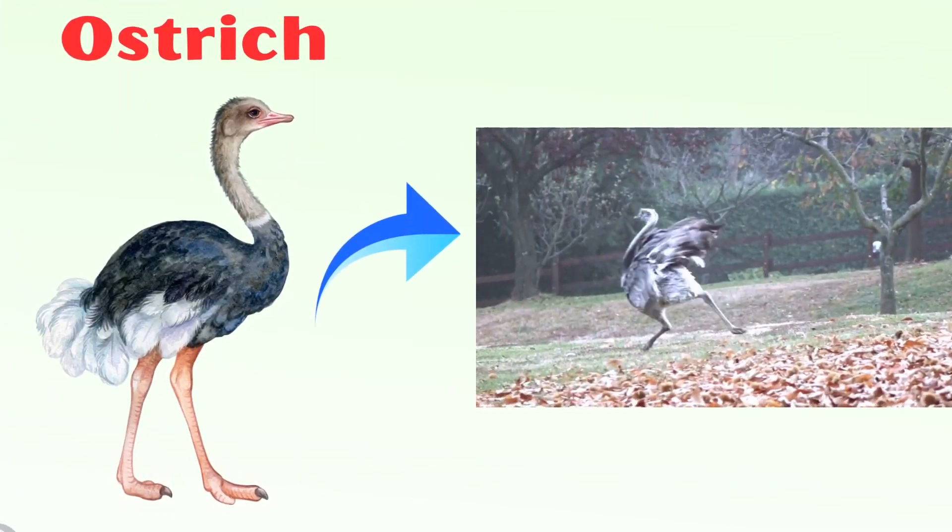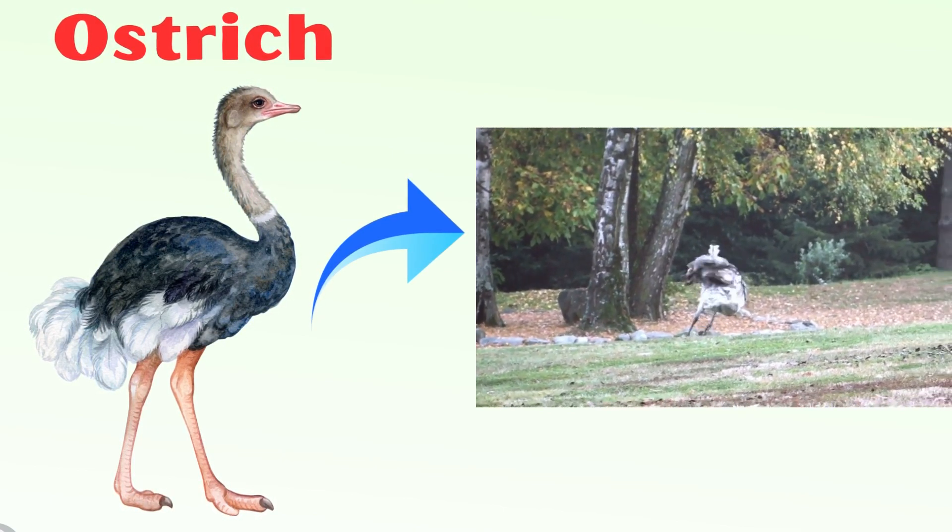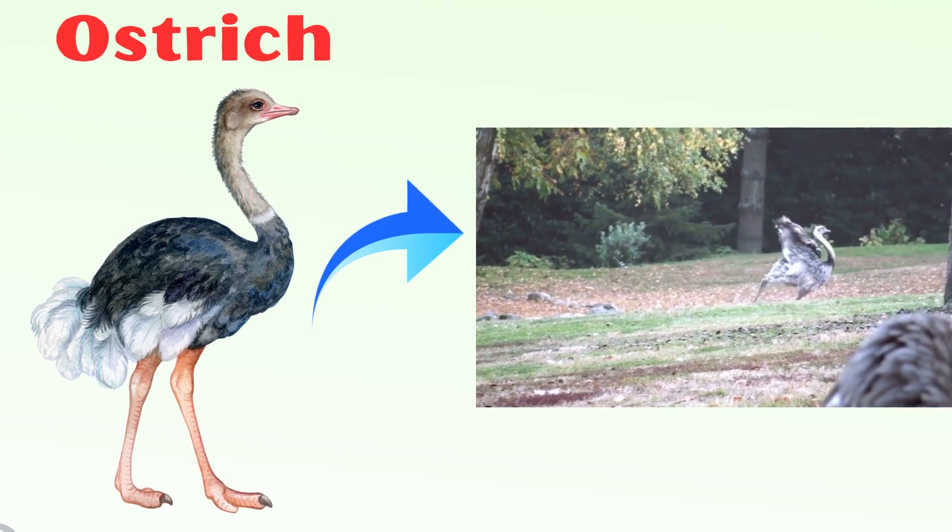Ostriches are the fastest running birds in the world. They can run continuously at speeds of 30 to 37 miles per hour.